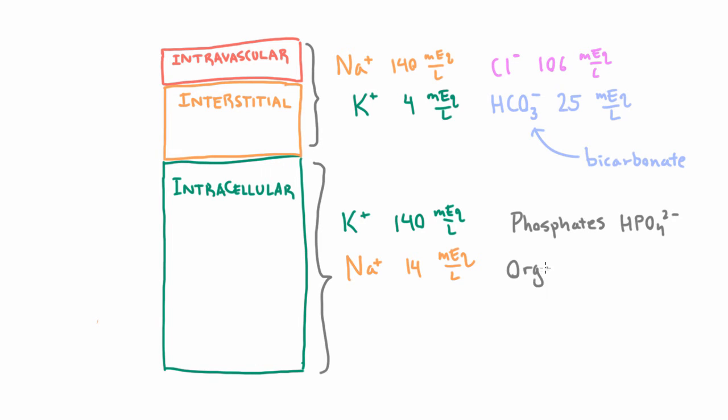You also have organic anions. So what exactly is an organic anion? Well the fact that it's organic means that it has carbon atoms in it, and the fact that it's an anion means that there are negative charges.